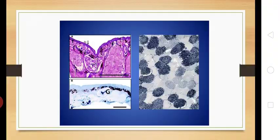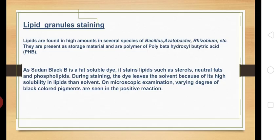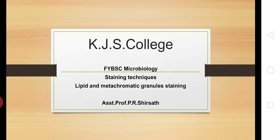So this is how we perform the Burdon method for lipid granule staining and the Albert method for metachromatic granule staining. I hope you have understood both types of staining methods — if not, please do comment. We are now done with staining techniques, and in the next lecture we are going to learn about sterilization and disinfection. Thank you.